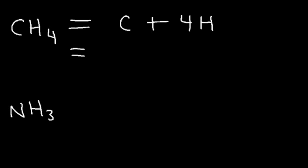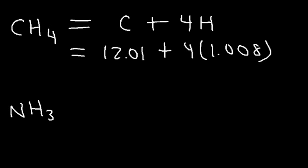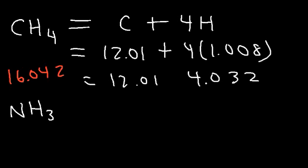The atomic mass for carbon is 12.01, and the atomic mass for hydrogen is 1.008. So four times 1.008, that's going to be 4.032. And if we add 12.01 to it, this is going to give us a molar mass of 16.042, and the units is grams per mole.